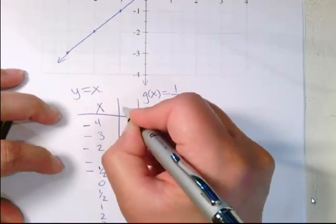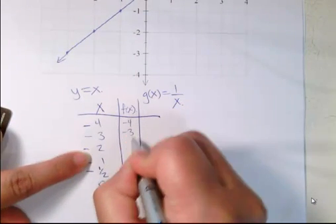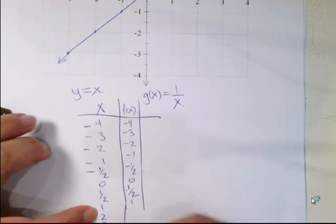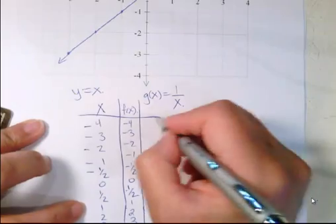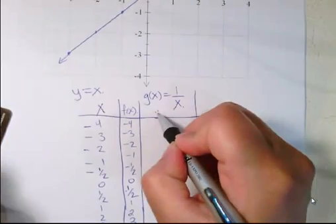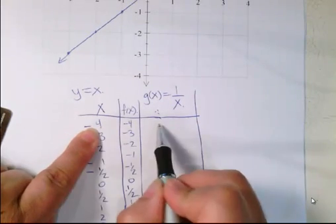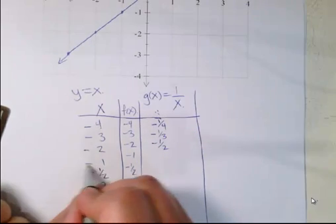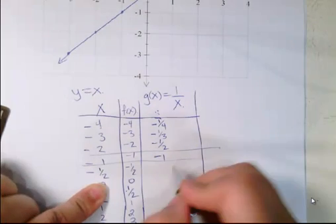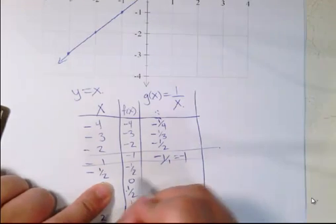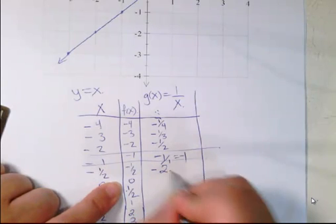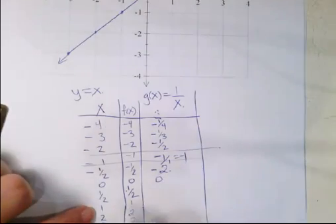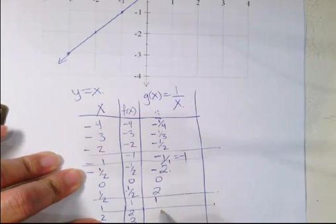For f(x) = x, the output values are exactly the same as the input x values — no change. Now for g(x) = 1/x, each value becomes 1 over that x value: so -1/4, -1/3, -1/2, then at x = -1 we get -1/1 = -1, and at x = -1/2 this changes to -2. Zero stays as zero.